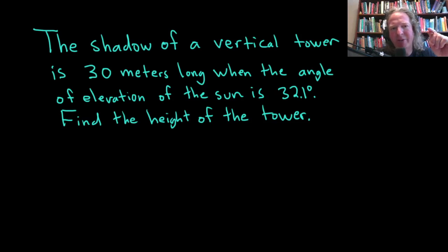The shadow of a vertical tower is 30 meters long when the angle of elevation of the sun is 32.1 degrees. Find the height of the tower. Let's go ahead and carefully work through this solution.